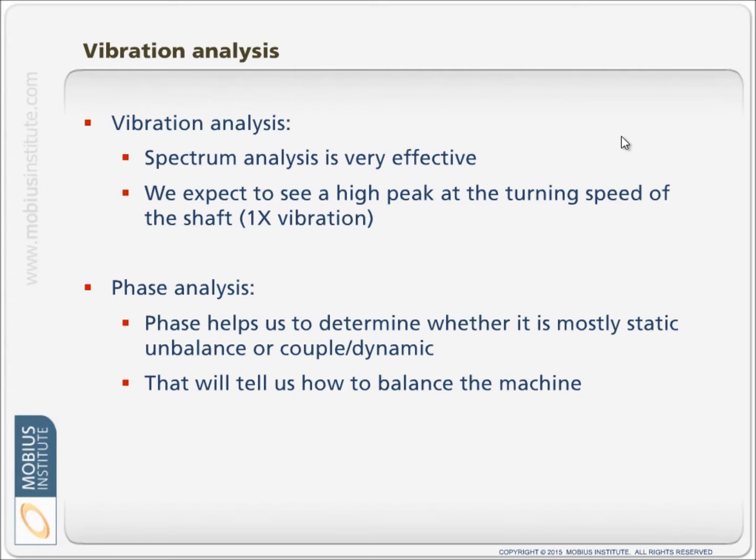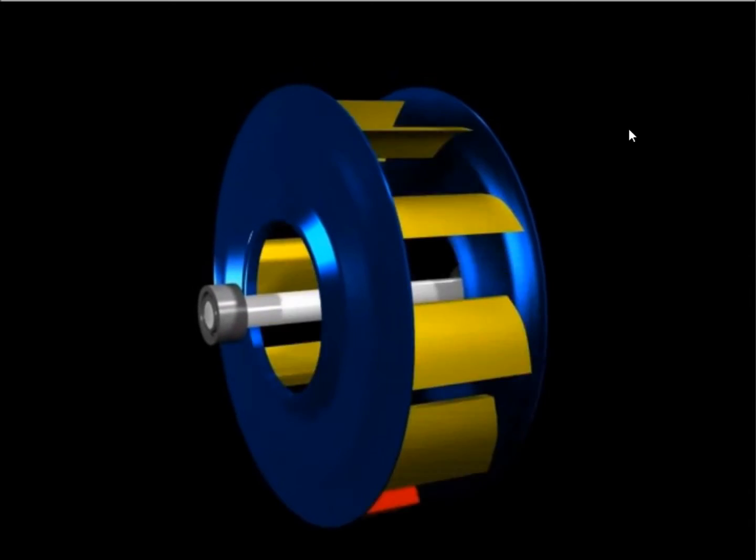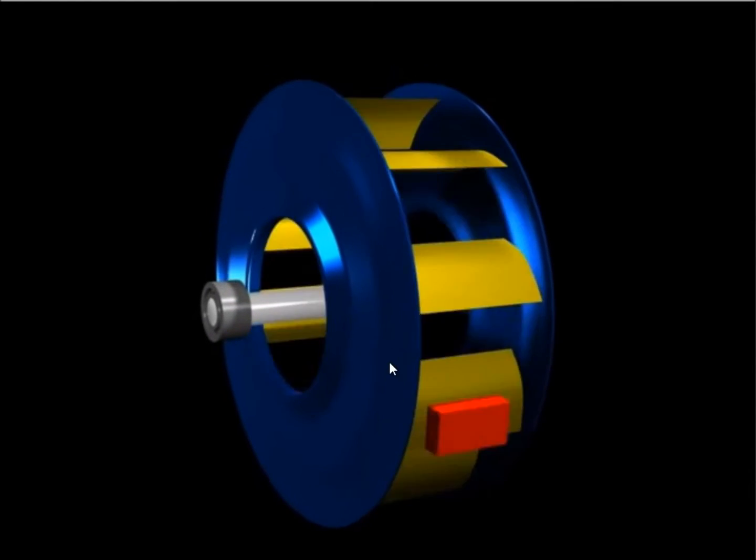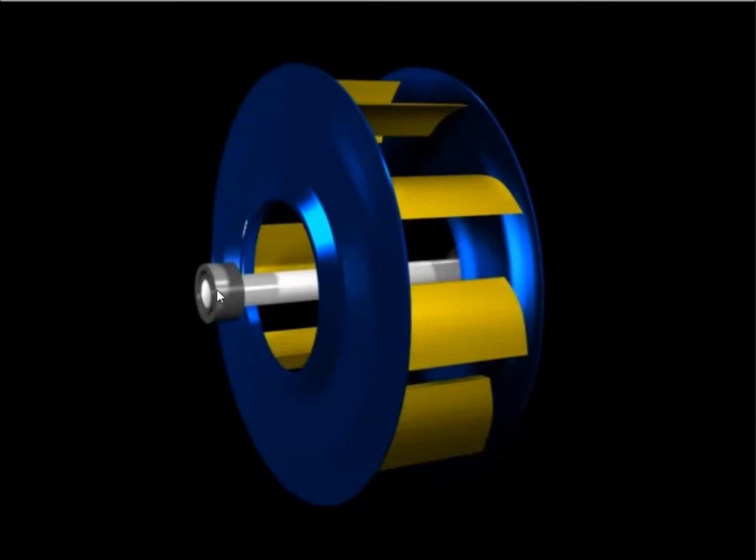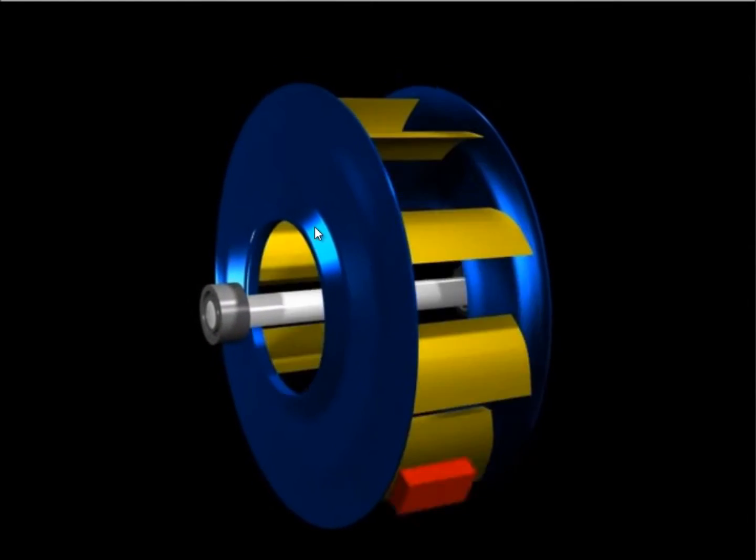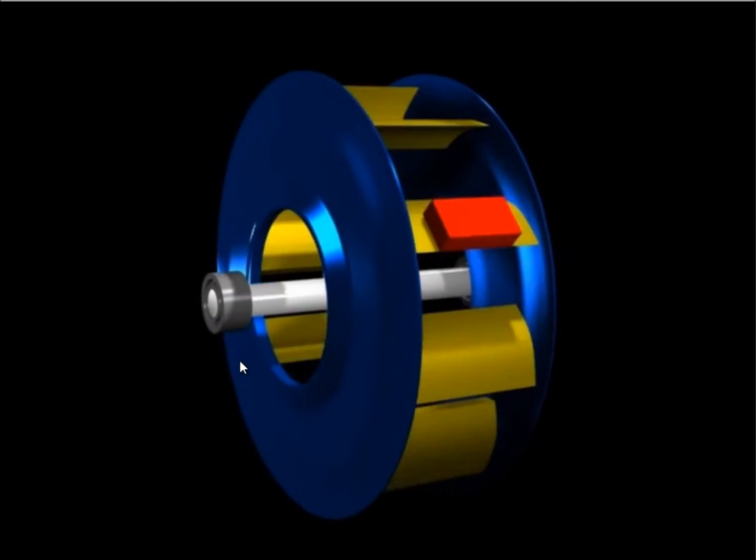If we have static unbalance, it's all in one plane. Number one, we see that the motion is at the running speed, so we see the high 1x peak.